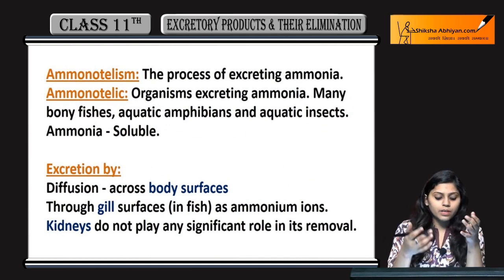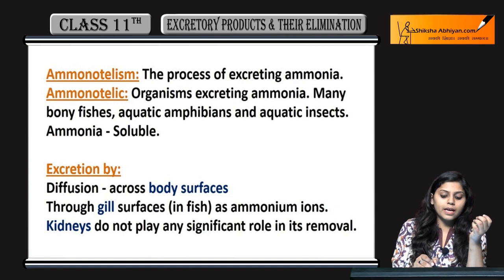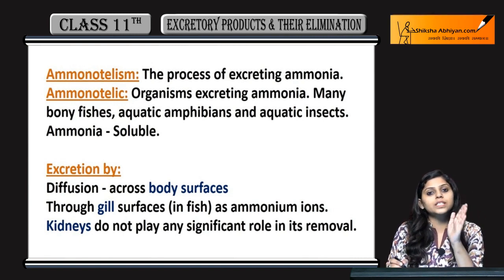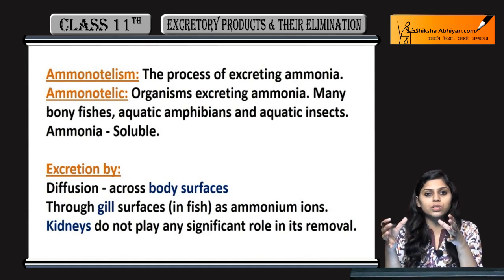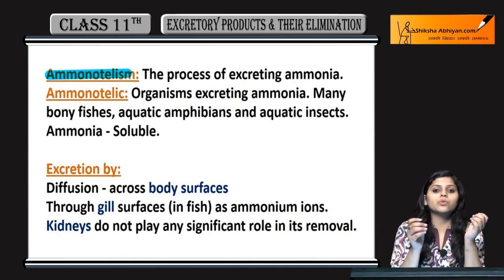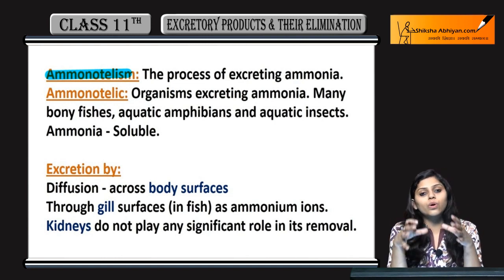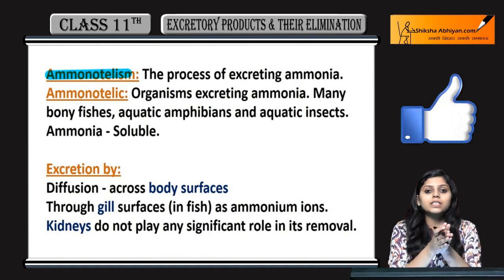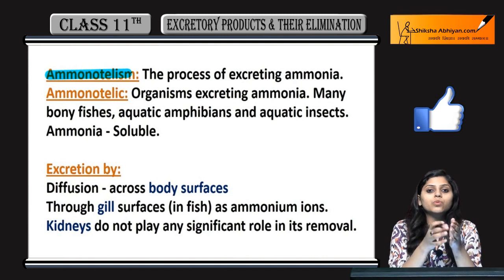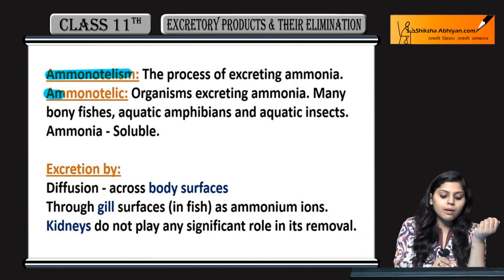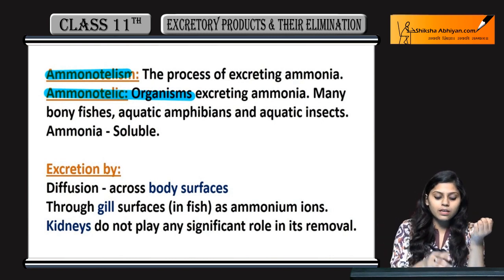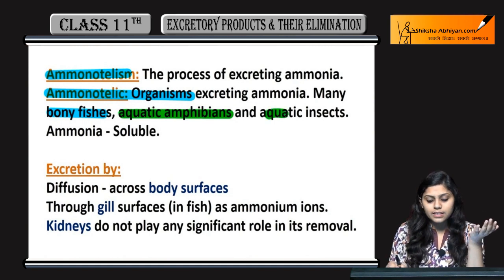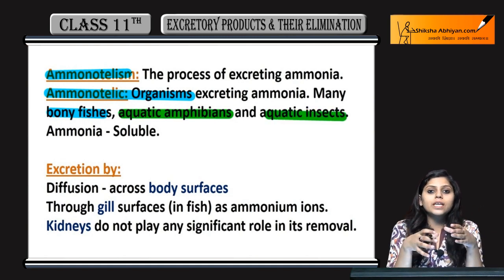Ammonotelism kya hota hai? It is the process of excreting ammonia. Organisms that follow ammonotelism — jin organisms mein ammonia ki excretion hoti hai — unhe ammonotelic organisms kahenge. Examples include bony fishes, some aquatic amphibians, and aquatic insects.